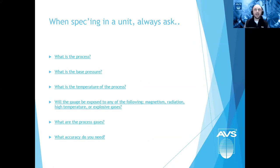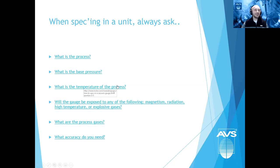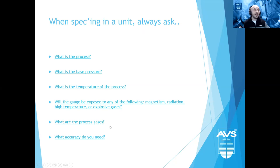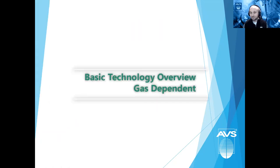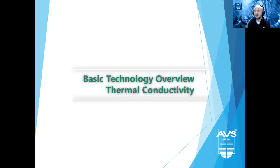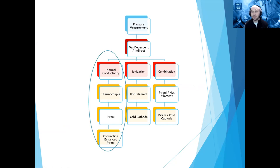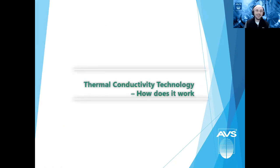Before getting into any technology, I always like to ask these basic questions when speccing something in: What's the process? What's the base pressure? What's the temperature? What will the gauge be exposed to internally and externally — magnetism, radiation, high temperature? Do I have explosive gases where a heated filament is a no-go? What are the process gases? Do I need to worry about corrosion, acidic, or basic vapors? And what accuracy do I need? From these questions, I'm pointed to the right gauge.